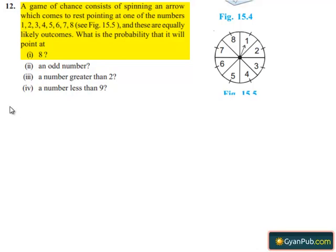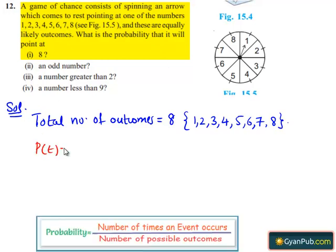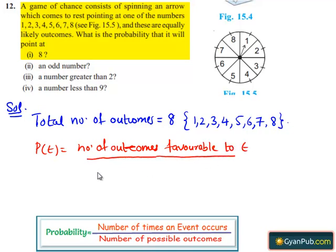Moving on to the solution. The total number of outcomes equals the frequency of numbers at which the arrow can point, which is 8 — that are 1, 2, 3, 4, 5, 6, 7, and 8. We know that the probability of any event P(E) equals the number of outcomes favorable to event E, divided by the total number of possible outcomes.